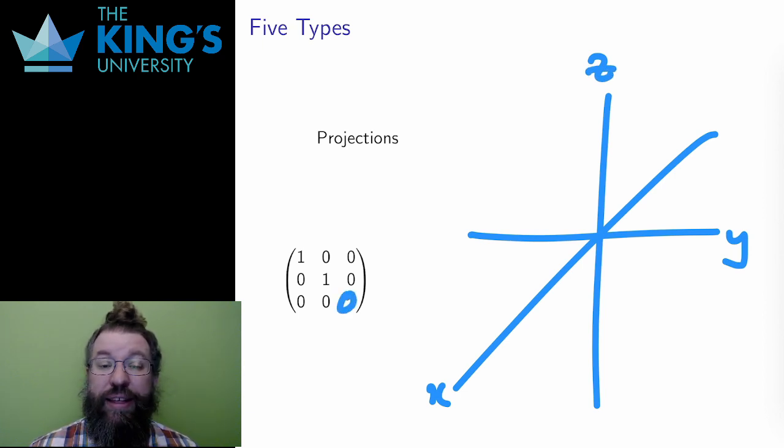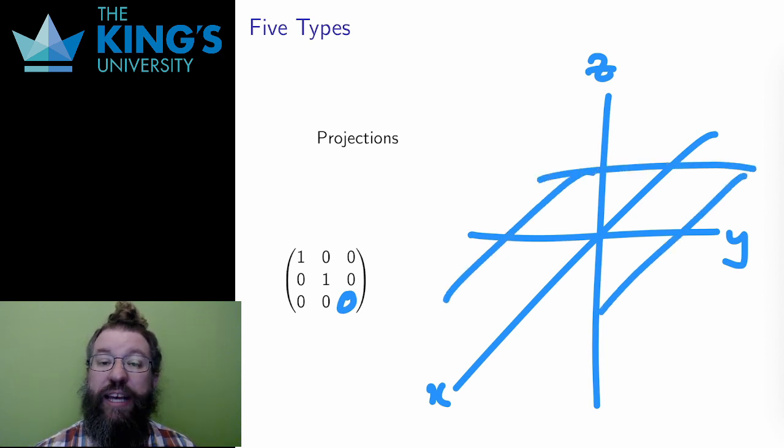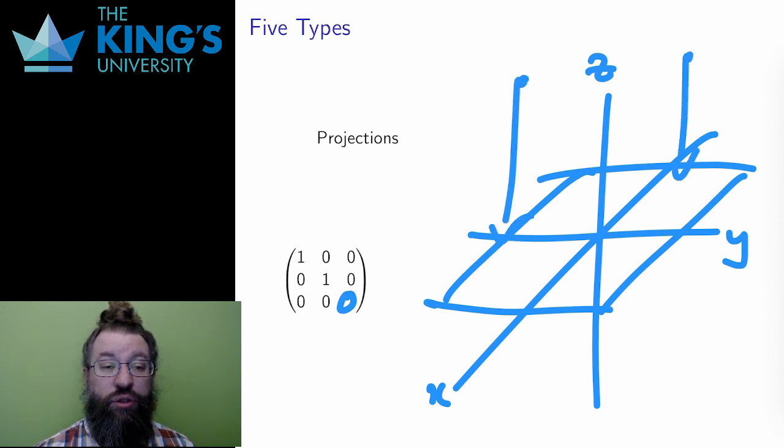This example is a transformation that leaves the x and y coordinates alone, but multiplies the z coordinate times zero. This removes any height, sending everything down to the xy plane. It is projection onto a plane.